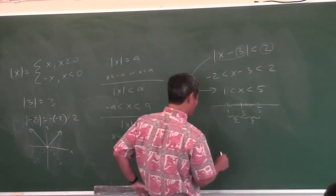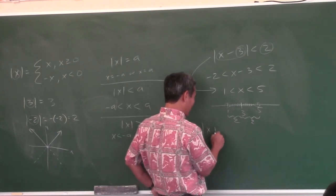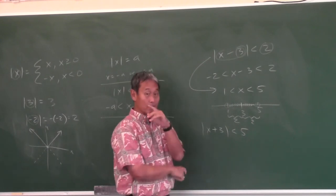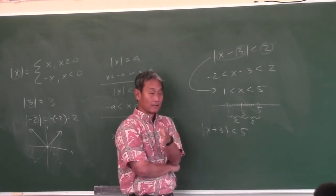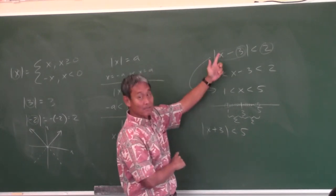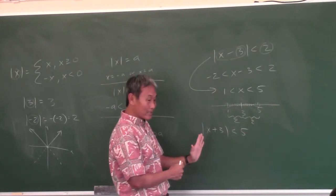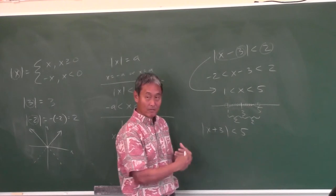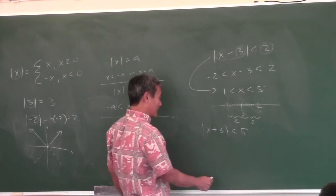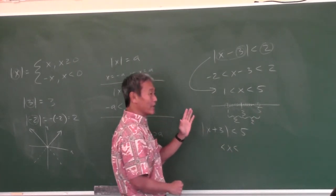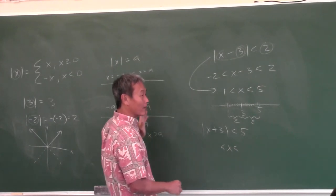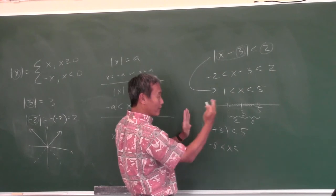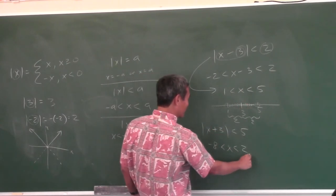Another problem: absolute value of x plus 3 is less than 5. When you see this, what's the midpoint? Negative 3 — because it has to be x minus something. Negative 3 is the midpoint, and you just go 5 left and 5 right. If we're at negative 3 and go 5 to the left, we're at negative 8. And 5 to the right, we're at 2. Done!